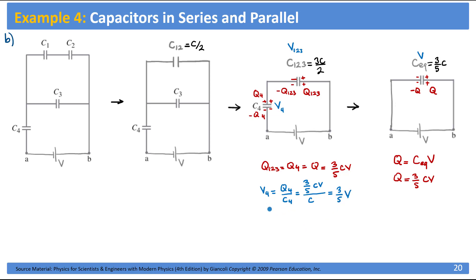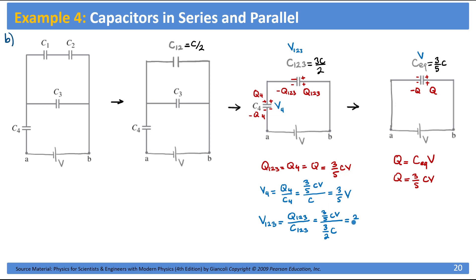Now what about V123? V123 equals Q123 divided by C123, which is (3CV/5) divided by (3C/2). The Cs cancel and the 3s cancel, giving us 2 over 5 times V. If you pay attention to the voltages, the sum of V123 and V4 equals 2V/5 plus 3V/5, which is V — just as expected. They shared the voltage according to their capacitances, and whichever has the larger capacitance has the lower voltage.